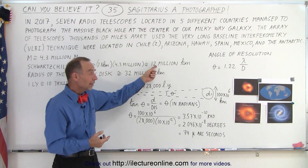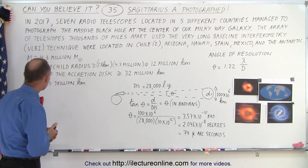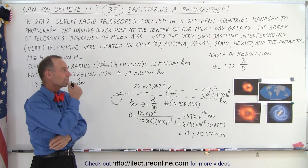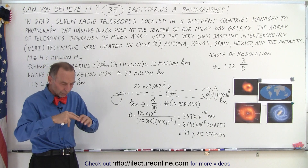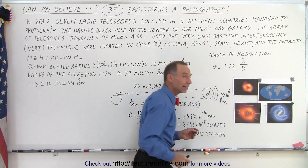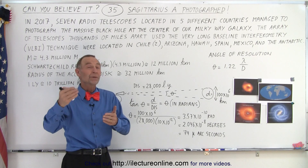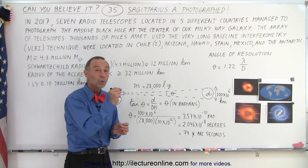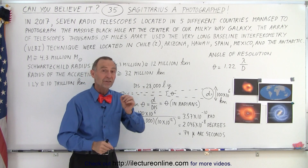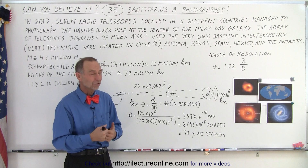The accretion disk isn't a lot bigger than the Schwarzschild radius or event horizon. The radius of the accretion disk is about 32 million kilometers — about three times the radius out to the Schwarzschild radius. That's actually a very small object; you're looking for something smaller than the solar system, located at the very center of our galaxy. The center of our galaxy is about 28,000 light years away from us, meaning it takes light 28,000 years to reach us, traveling at 300,000 kilometers per second — 186,000 miles per second.